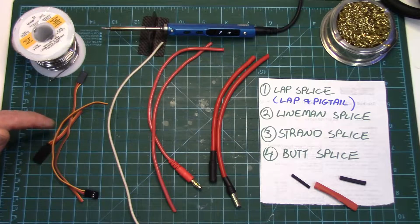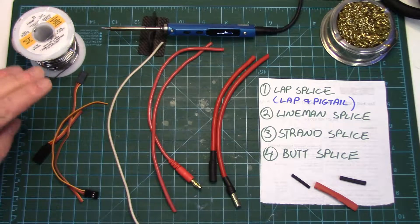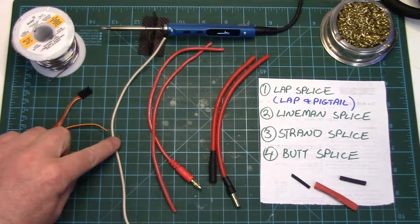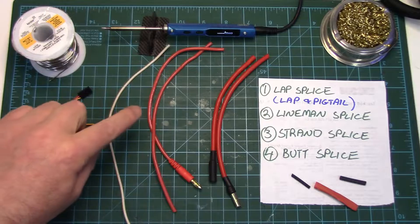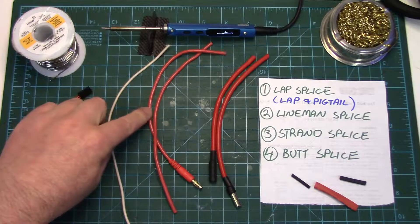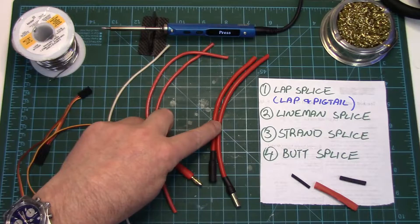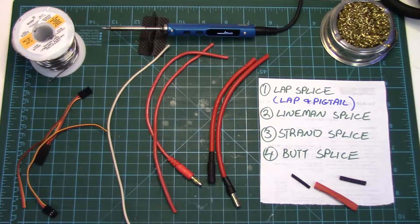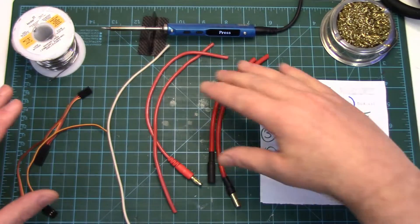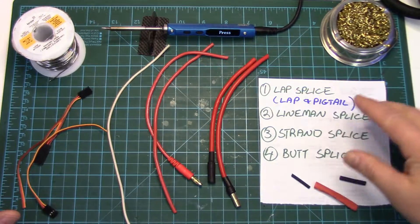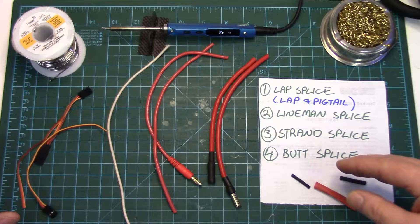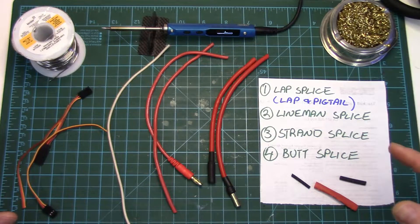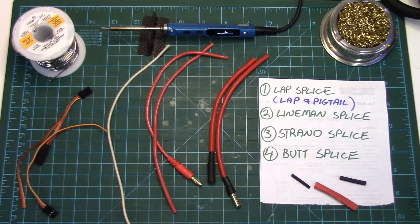We'll be starting with the smaller stuff first and working to the big stuff. We've got 26 gauge small servo type wiring, 16 gauge automotive, 14 gauge silicone test lead type wire and some big 10 gauge. Each one will have a different method of joinery. This splicing is all done on stranded wire. All the same methods could be used for single strand except for the strand splice.